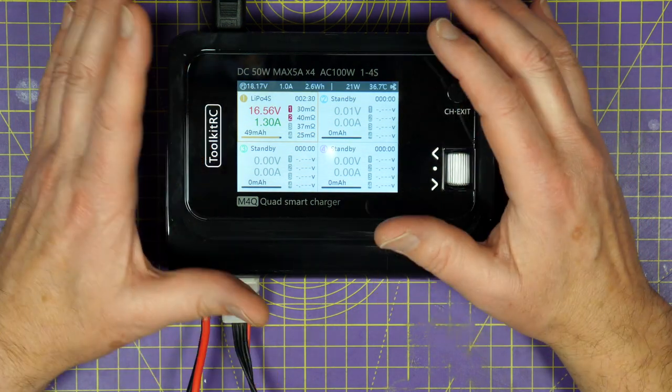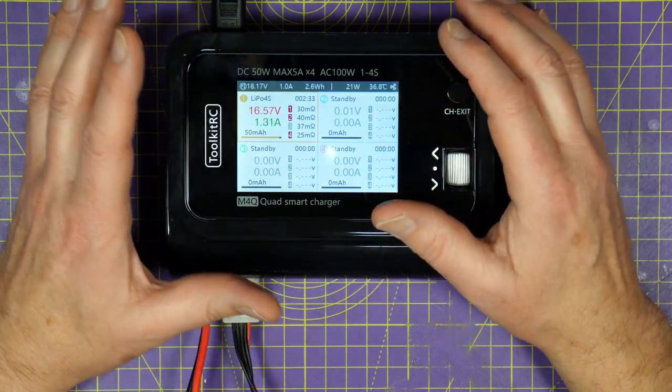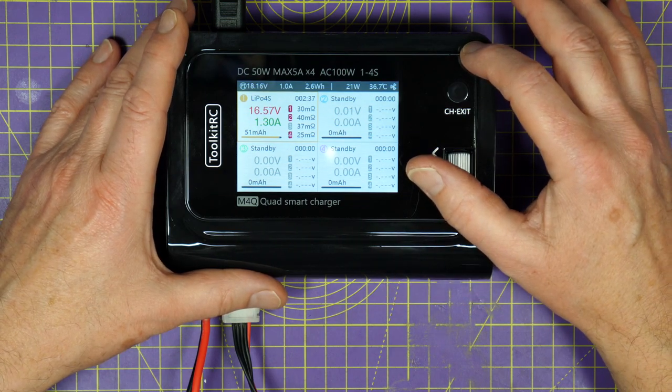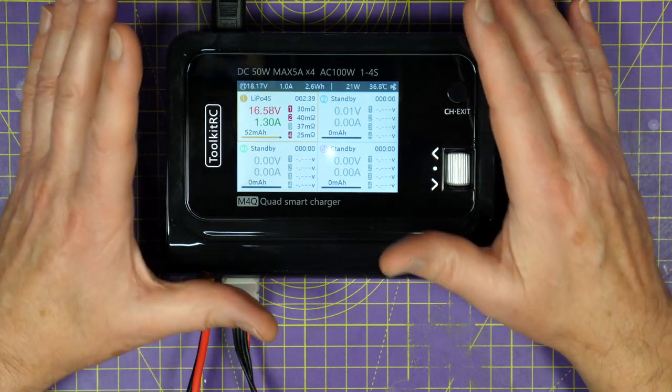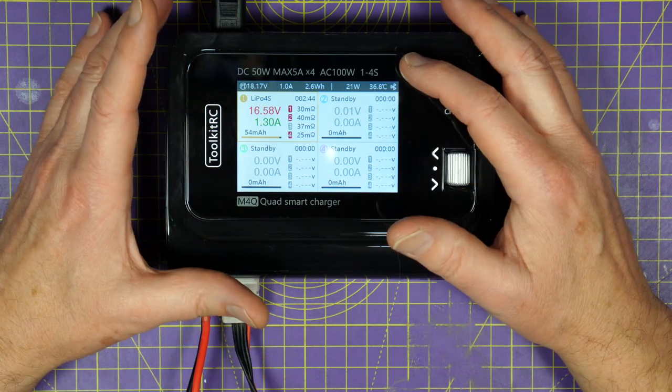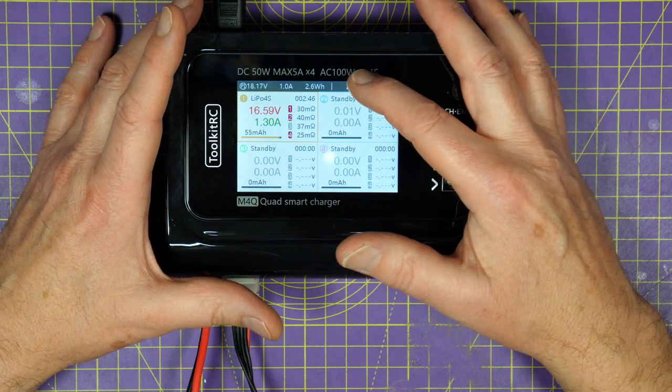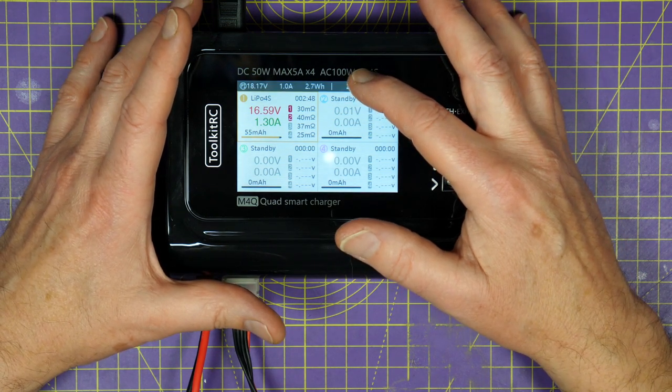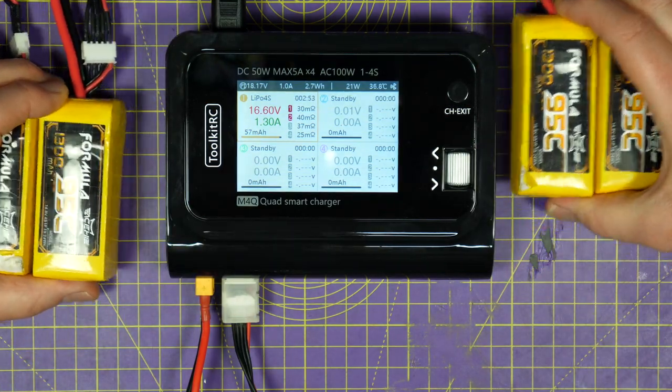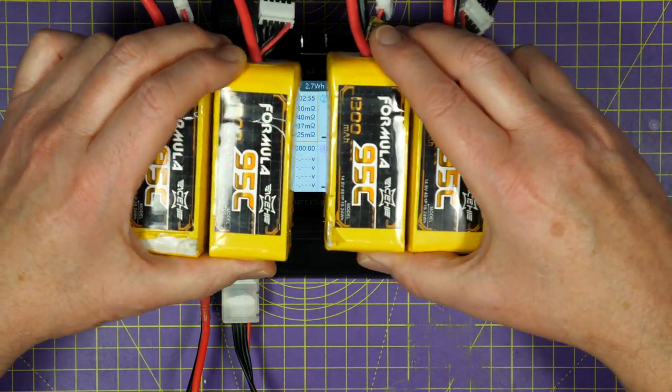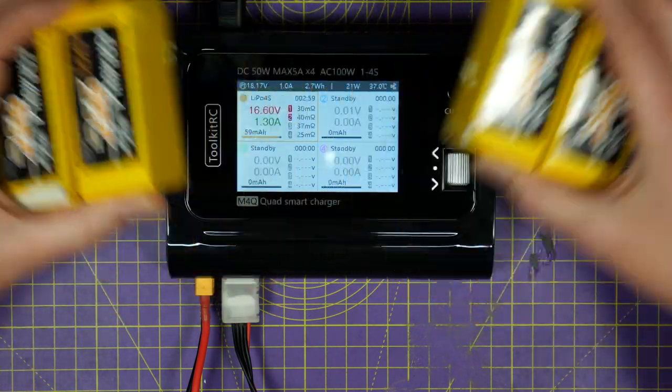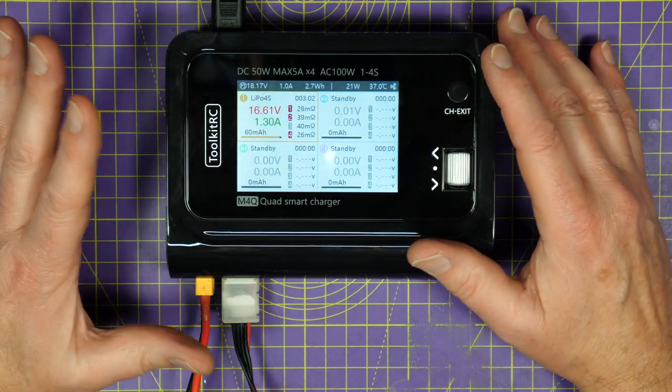Now, I've been through this in other videos but people still seem to get very confused about power ratings on these multi-channel chargers. You've got to remember, you can't get more power out of this than you put in. The built-in AC power supply on this is rated at 100 watts. So, if you want to charge, say, I don't know, I've got these four 1300 mAh batteries.